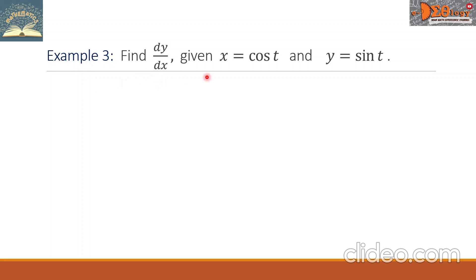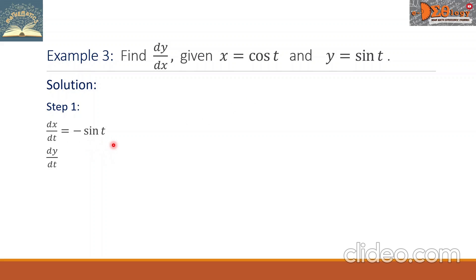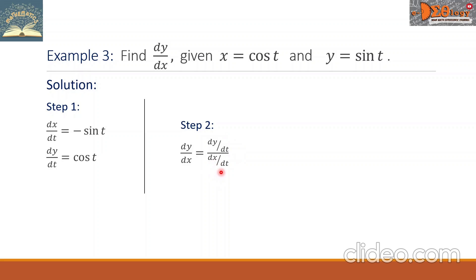Example 3: Find dy over dx given x equals cosine t and y equals sine t. Step 1: take the derivatives with respect to t. dx over dt equals negative sine t. dy over dt equals cosine t. Step 2: dy over dx equals dy over dt over dx over dt, which is cosine t over negative sine t. Using our identity, this simplifies to negative cotangent t.